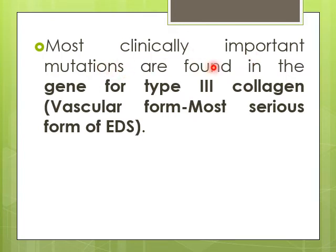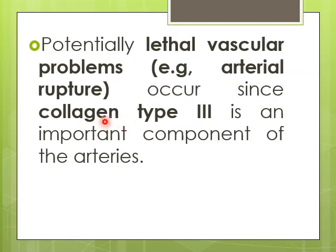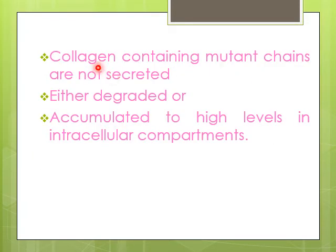Clinically important mutations are seen in the type 3 collagen gene, giving rise to the vascular form of EDS, considered the most serious type. Since type 3 collagen is a key component of arteries, defective type 3 collagen may result in life-threatening vascular problems such as arterial rupture. Mutant collagen chains cannot be properly secreted, are difficult to degrade, and can accumulate to high levels within cell compartments.